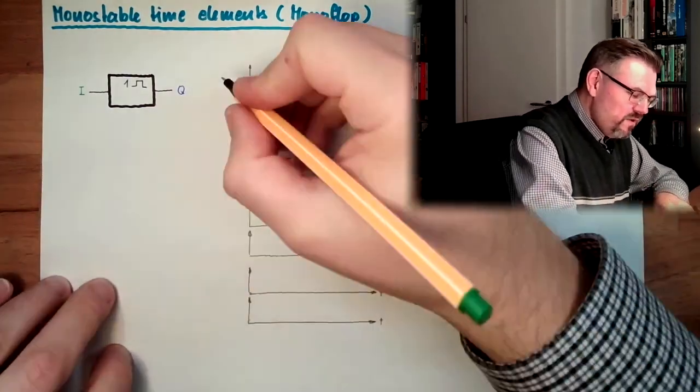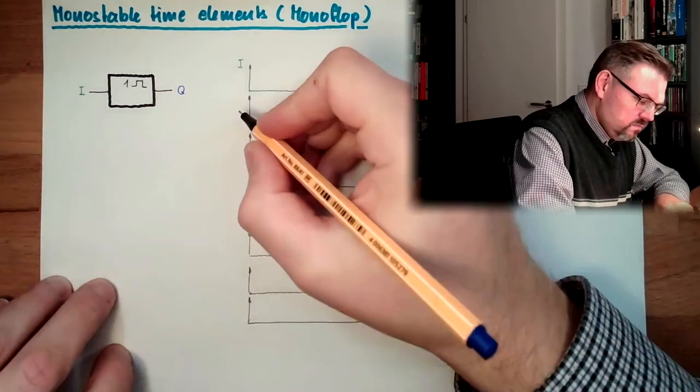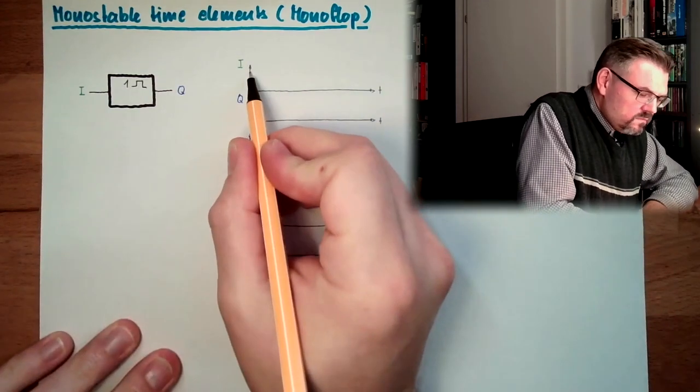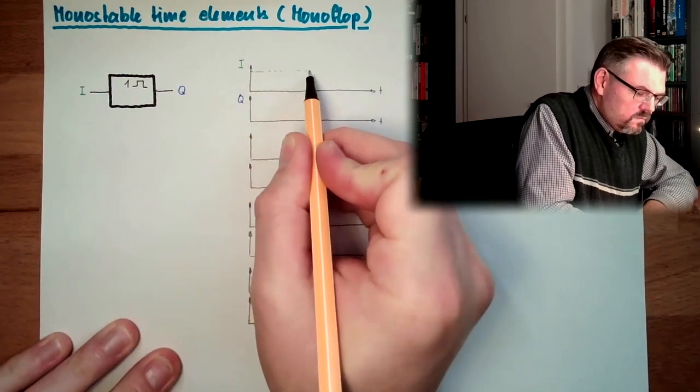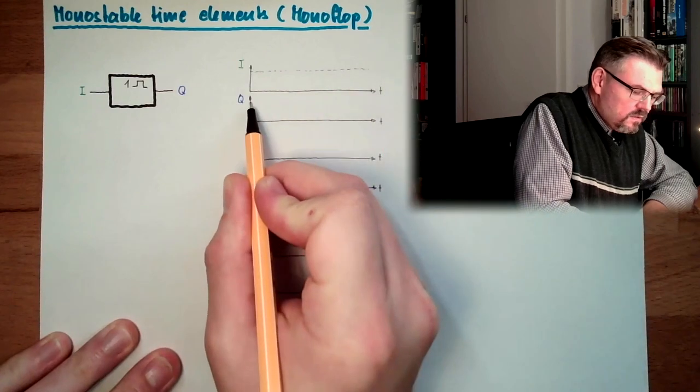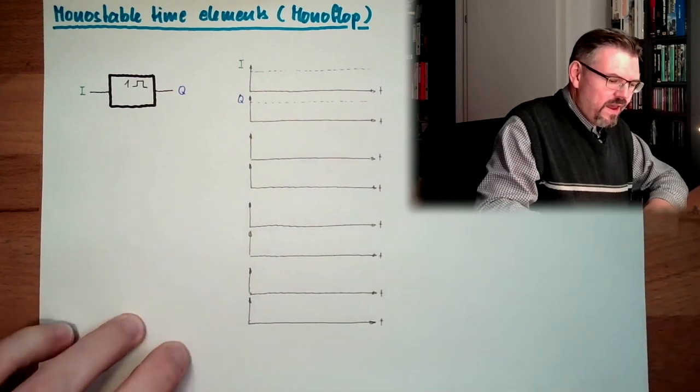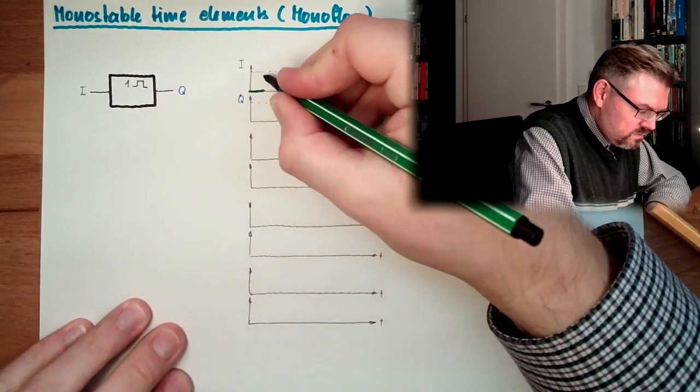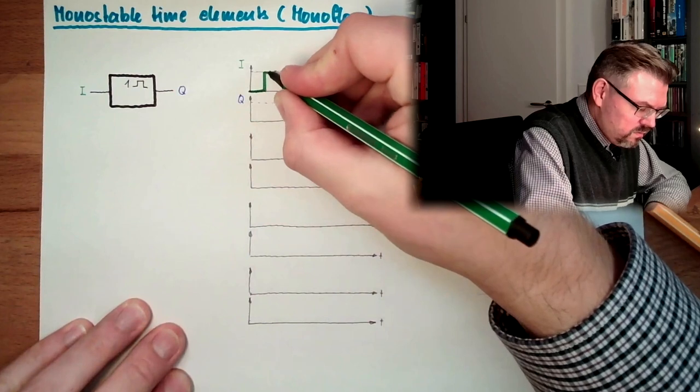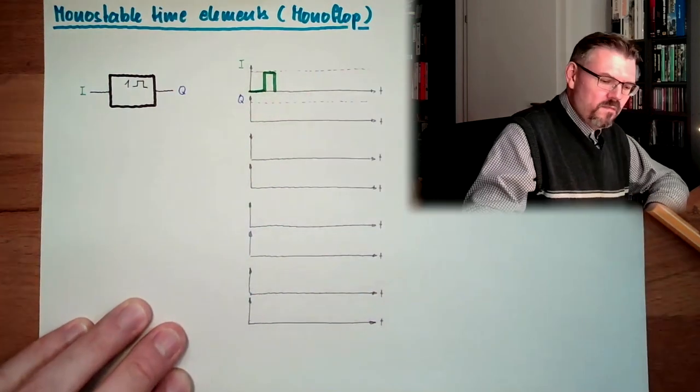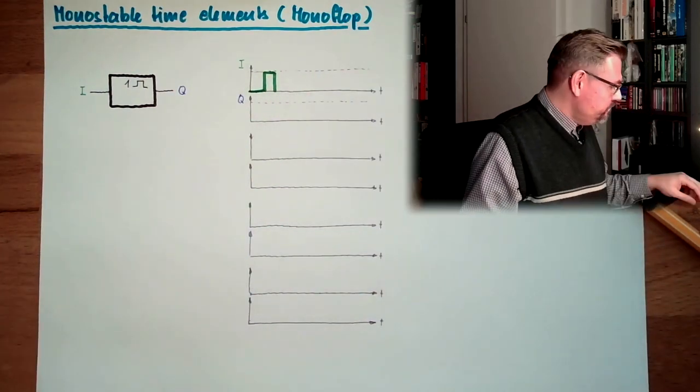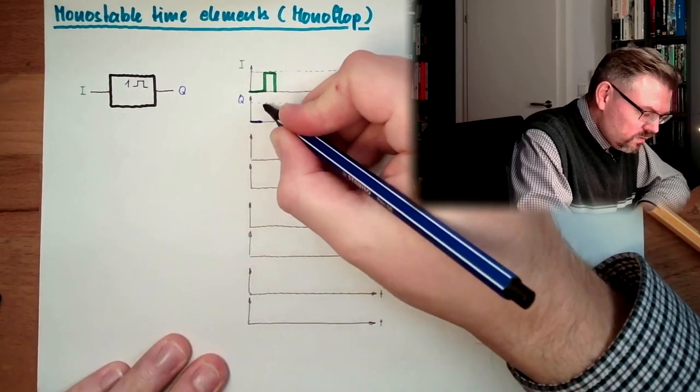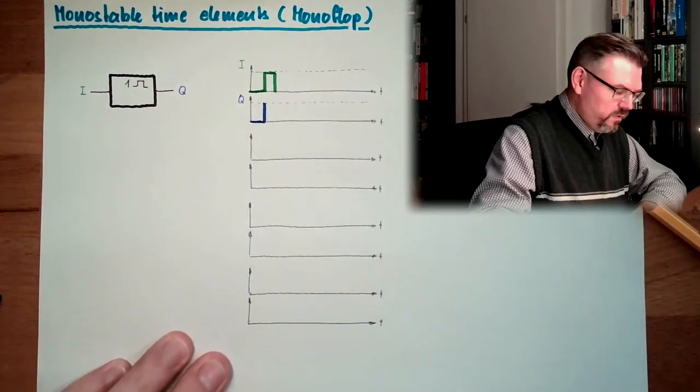What does it mean? So if I draw here i and here q, and here is logically 1, and here is logically 1, and at some point in time, the input changes from 0 to 1. At this point in time, q is also changing from 0 to 1, at exactly this point in time.